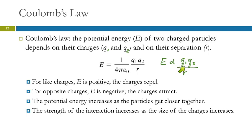If both charges are the same sign, the potential energy is positive — they repel. If one charge is negative and one is positive, they're attracted to each other, causing the potential energy to be negative, and it decreases as the particles get closer together.